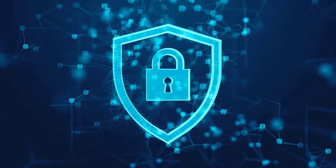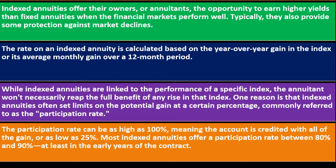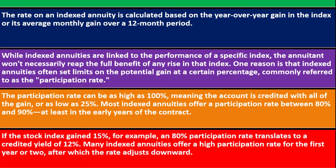The participation rate can be as high as 100 percent, meaning the account is credited with all of the gain, or as low as 25 percent. Most indexed annuities offer a participation rate between 80 and 90 percent, at least in the early years of the contract. If the stock index gained 15 percent, for example, an 80 percent participation rate translates to a credited yield of 12 percent. Many indexed annuities offer a high participation rate for the first year or two, after which the rate adjusts downward.